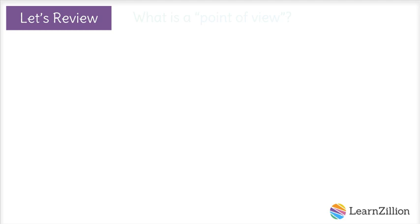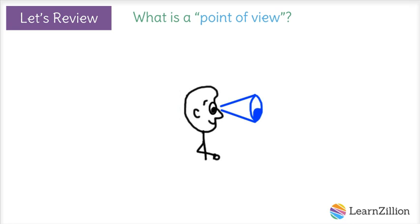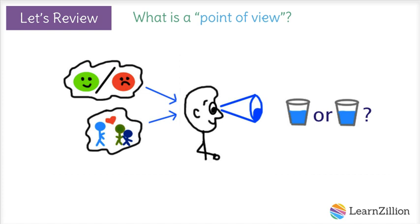So what is a point of view? Point of view is how we see things. We each have a unique way of looking and thinking about the world, and our point of view is shown through our opinions and beliefs. For example, have you ever heard the saying, is the glass half empty or half full? If you think the glass is half full, you might be someone who is generally more cheerful and sees the world in a positive light. But if you think the glass is half empty, then maybe you're someone who doesn't always look on the bright side. Our point of view is shaped by our past experiences and also our relationships with other people.